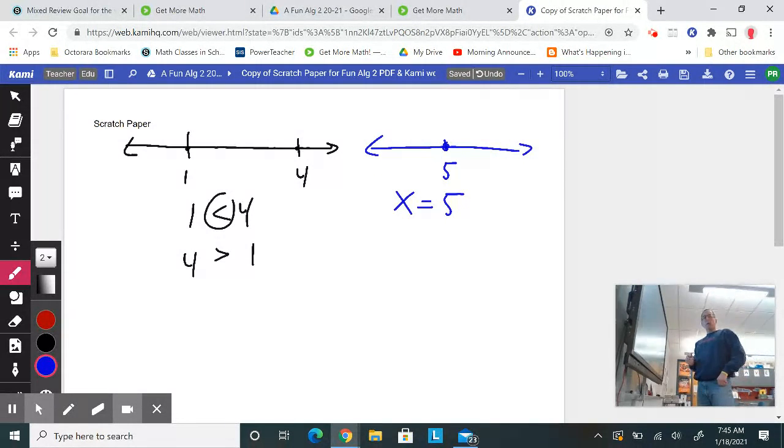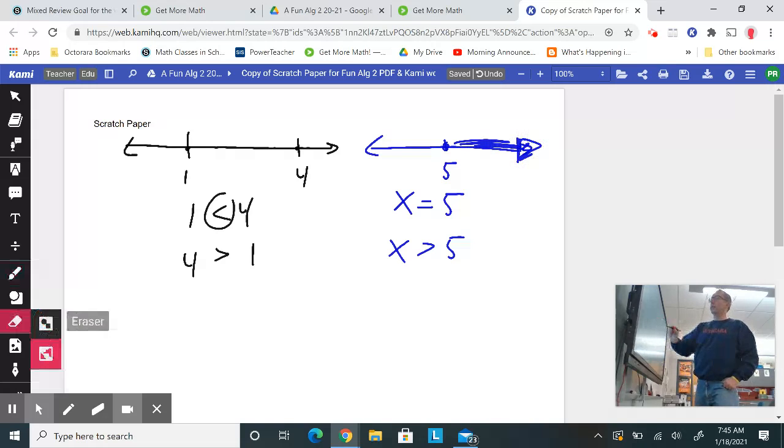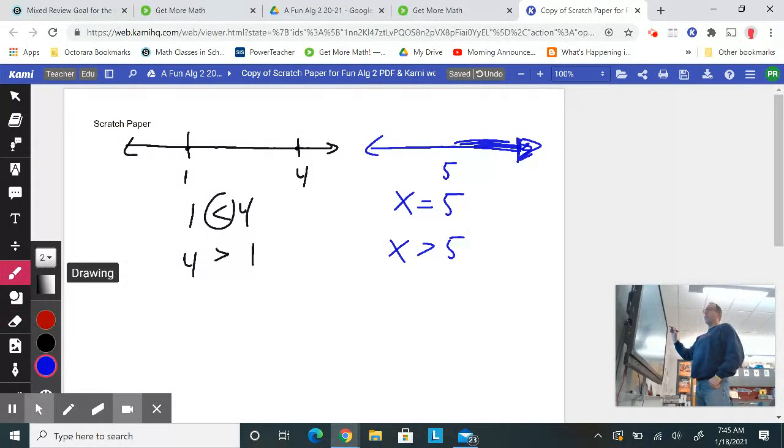Now, if I want all the numbers that are greater than 5, I want all the numbers this way, and shade the arrow too, but I don't want the 5. So I'd have to erase the point for 5, and I'd just have an empty circle.